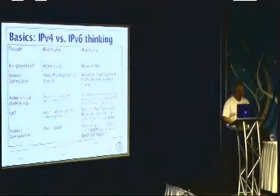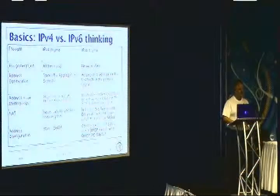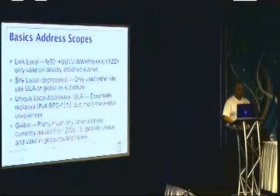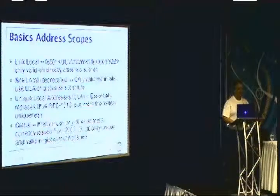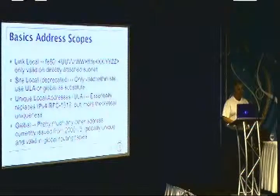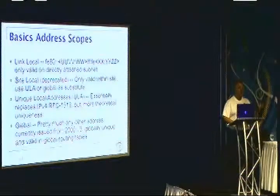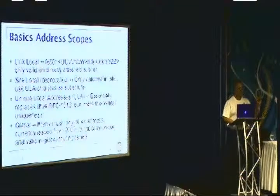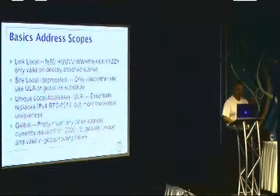In terms of address configuration methods, we have static and DHCP in IPv4. We have those same methods in IPv6, but we also have another method called stateless autoconfiguration. Another new concept for IPv6 is address scoping. We have two scopes: link local and global unicast. Global unicast is what you're used to in IPv4 — addresses valid anywhere on the internet. Link local addresses are strictly valid within a link, which is what most of you think of as a subnet — the hardware concept of a subnet, not the software concept.